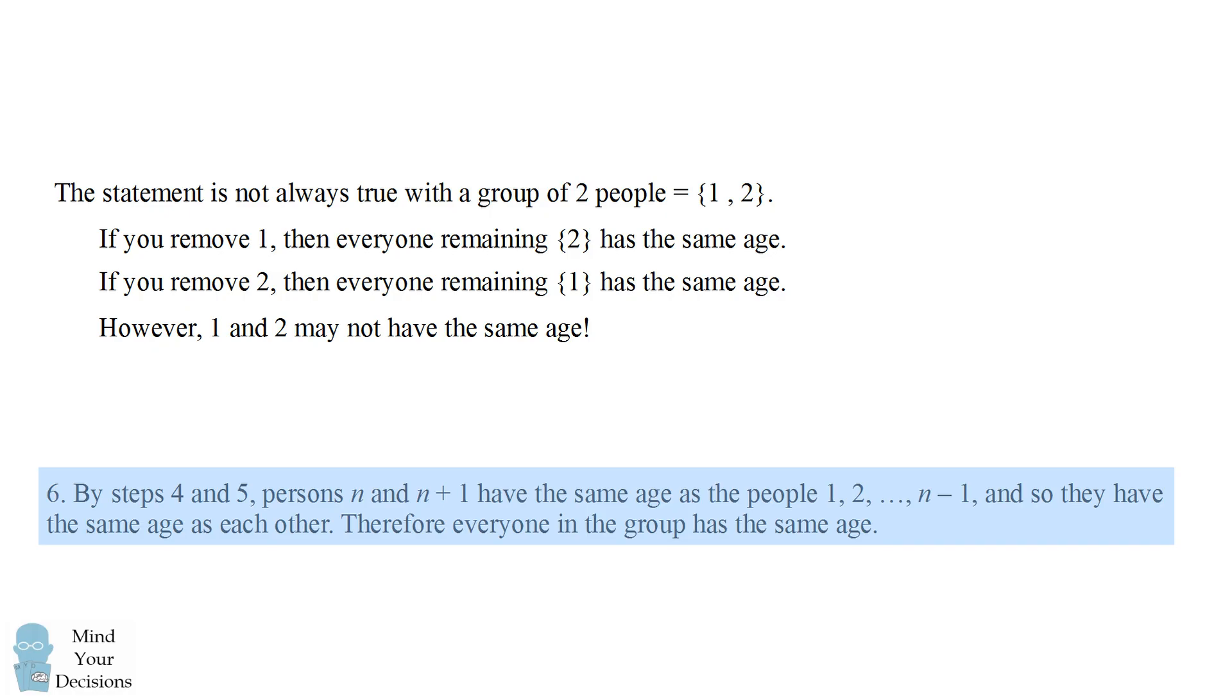So this is the flaw in this proof, that it will not work when n equals 2, and therefore the induction domino effect doesn't happen. We can't say it's therefore then true for 3 and 4 and so on. So clearly, not everyone in the world has the same age. Induction is a powerful proof technique, but each step has to be valid, or you may end up with an absurd conclusion. Did you figure it out?